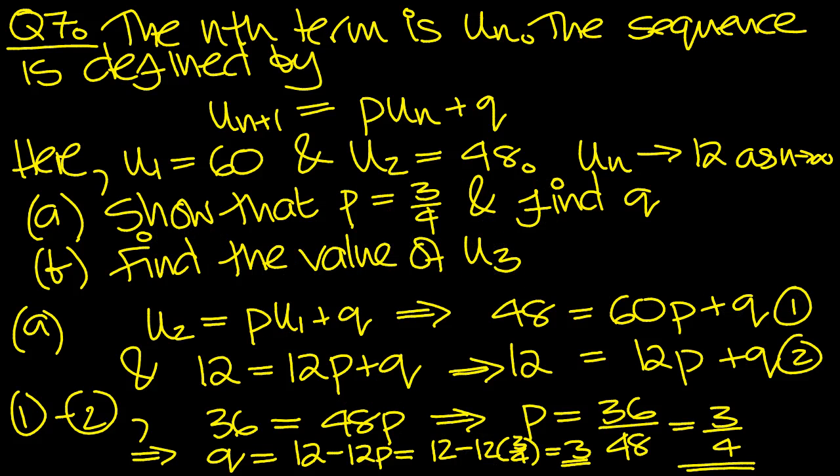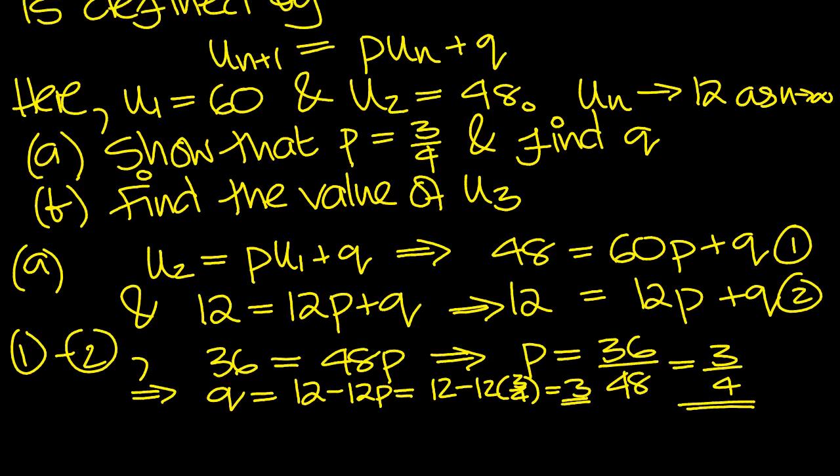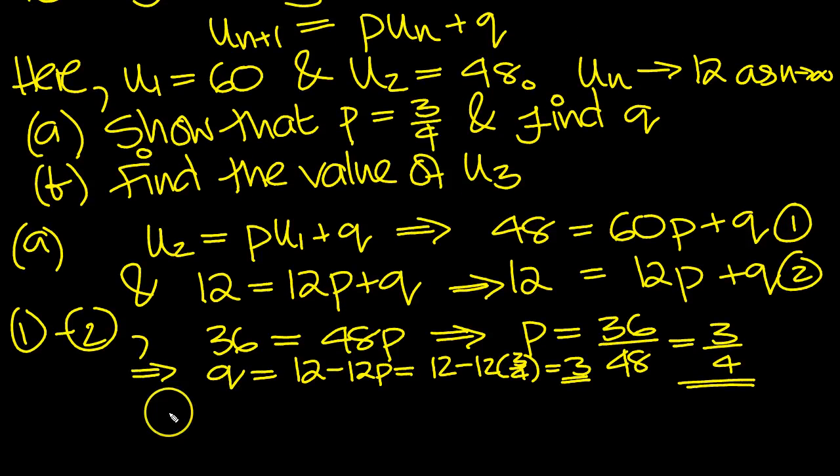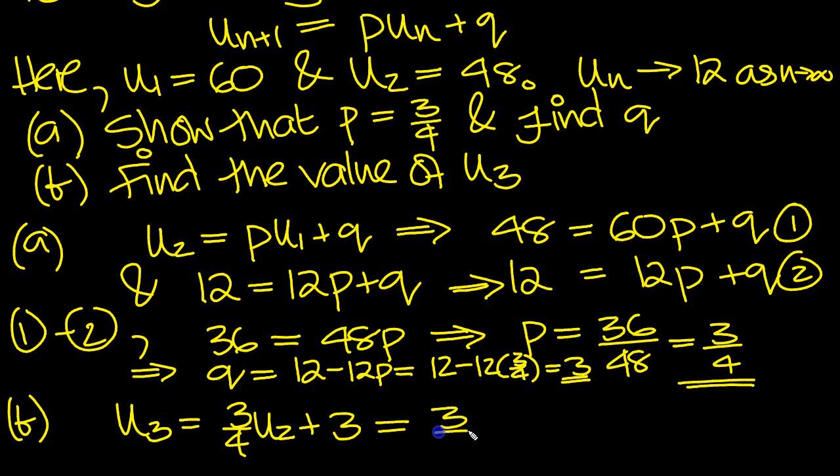Find the value of u3. We know u2, so u3 is equal to pu2 plus q, which is 3/4 of u2 plus 3. That's 3/4 of 48 plus 3. Three quarters of 48 is 36, plus 3 is 39, so u3 is 39.